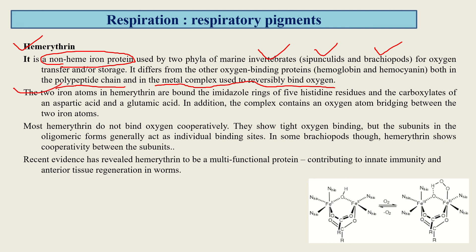The two iron atoms in hemerythrin are bound without a heme ring. The complex contains an oxygen atom bridging between the two iron atoms. Most hemerythrin does not bind oxygen cooperatively — it shows tight oxygen binding, but the subunits in oligomeric forms generally act as individual binding units. However, in some brachiopods, hemerythrin does show cooperativity between subunits.